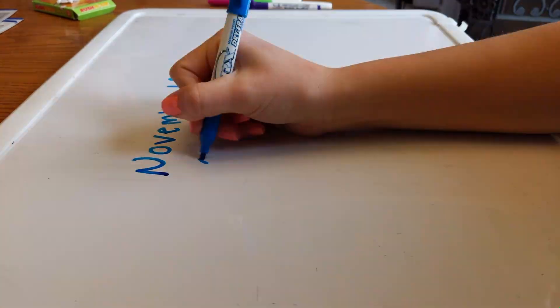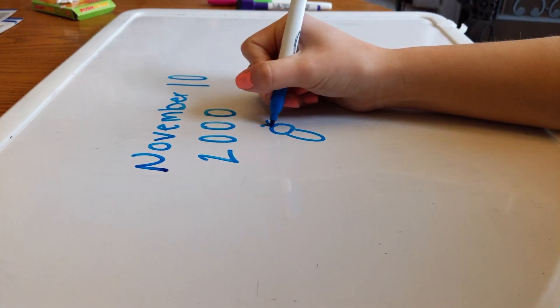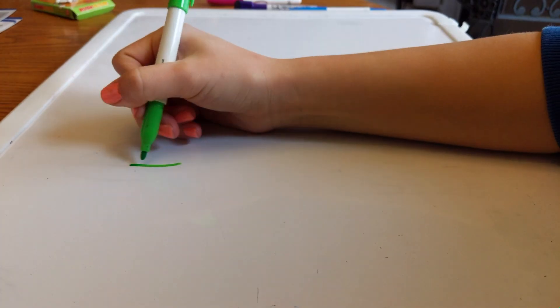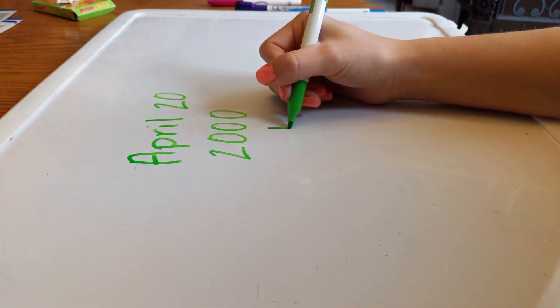All right, so I was born November 10, 2000, and realized I could not draw babies here. Dylan was born April 20, 2000, but obviously didn't know he was born at the time.